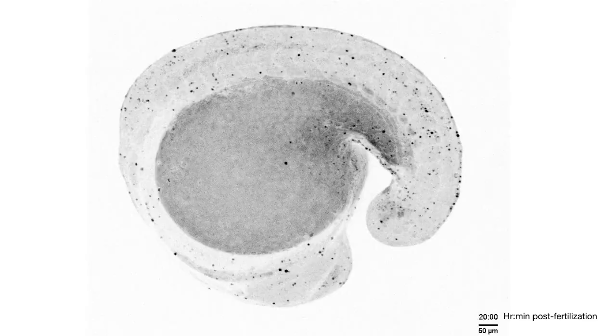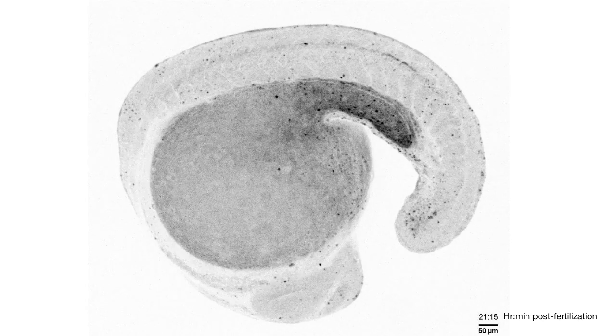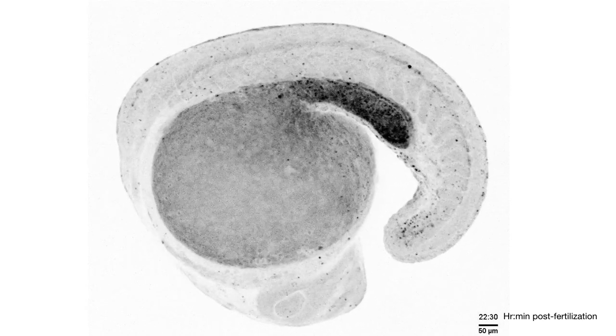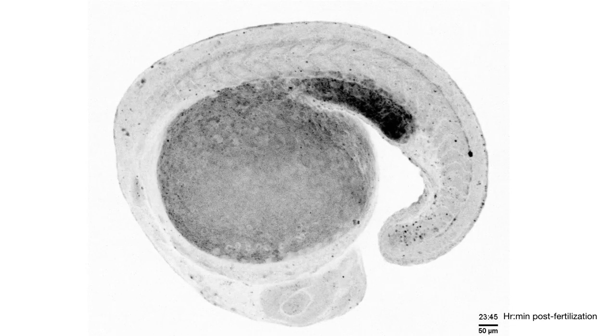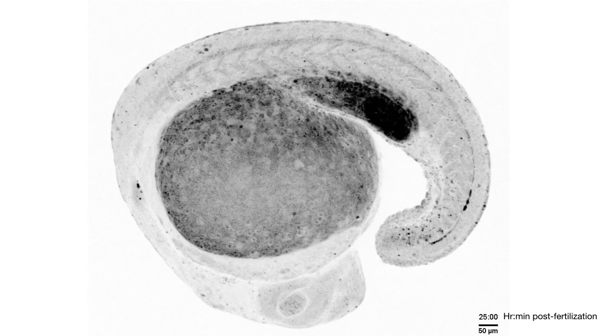To verify and measure movement of the Reissner fiber, we photo-bleached a portion of it and captured time-lapse images. We can see that the Reissner fiber is continually moving in a rostral to caudal direction. This video shows the development of the Reissner fiber during embryogenesis, starting at 20 hours post-fertilization. You can see pieces of Reissner material streaming down the central canal from head to tail and eventually accumulating at the tail tip.